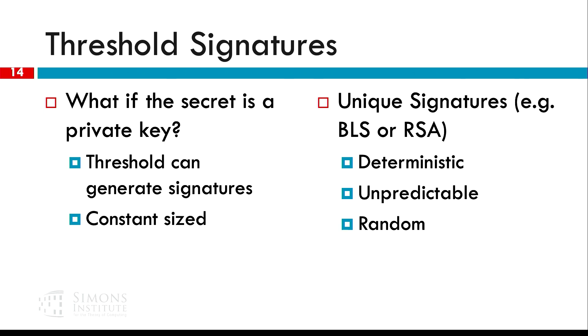What can we do with these secret sharing protocols and what is useful in consensus? First, we can do threshold signatures, which means we can generate signatures from the whole group of the consensus collectively, which are constant in size. This is why the protocol scales.